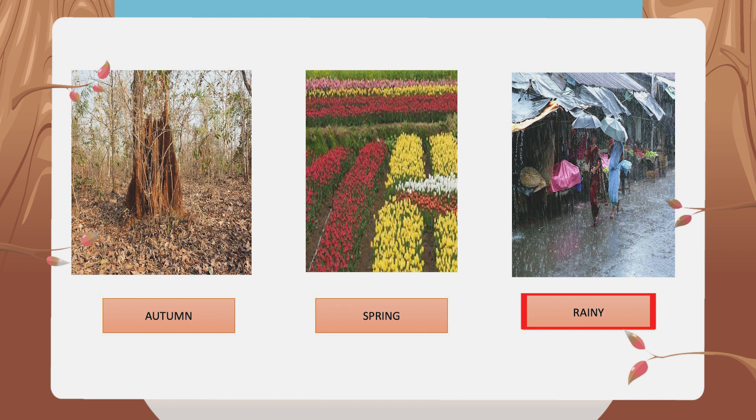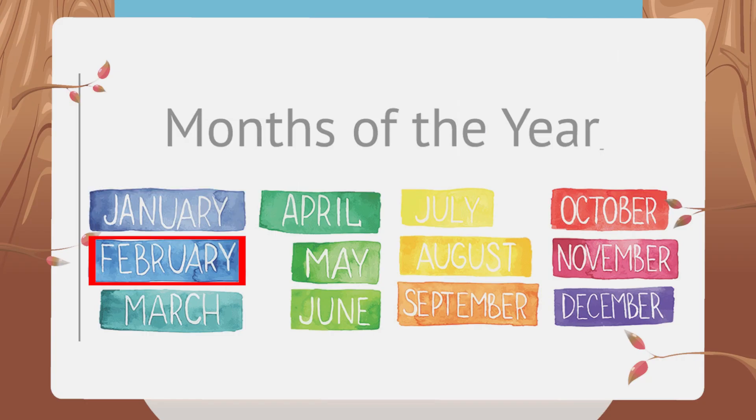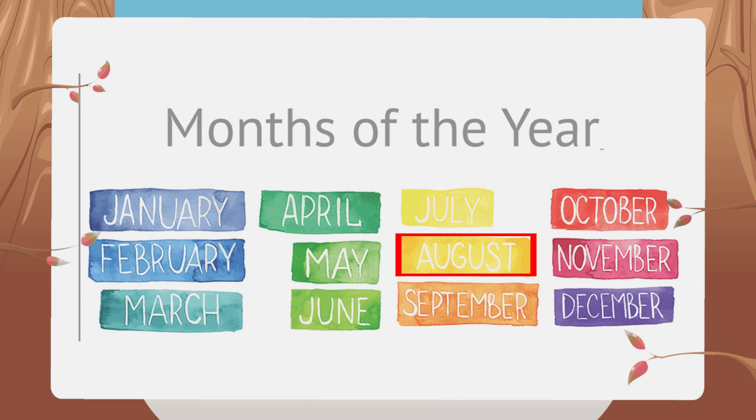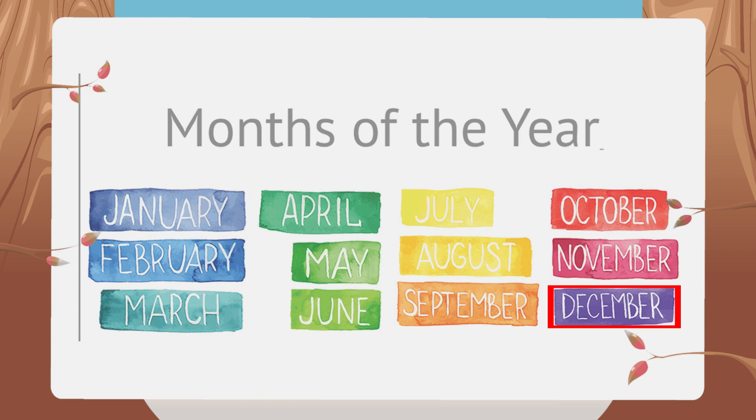As you have seen, there are five seasons throughout the year and there are 12 months in a year. Let's recall the names of the months: January, February, March, April, May, June, July, August, September, October, November, and December.